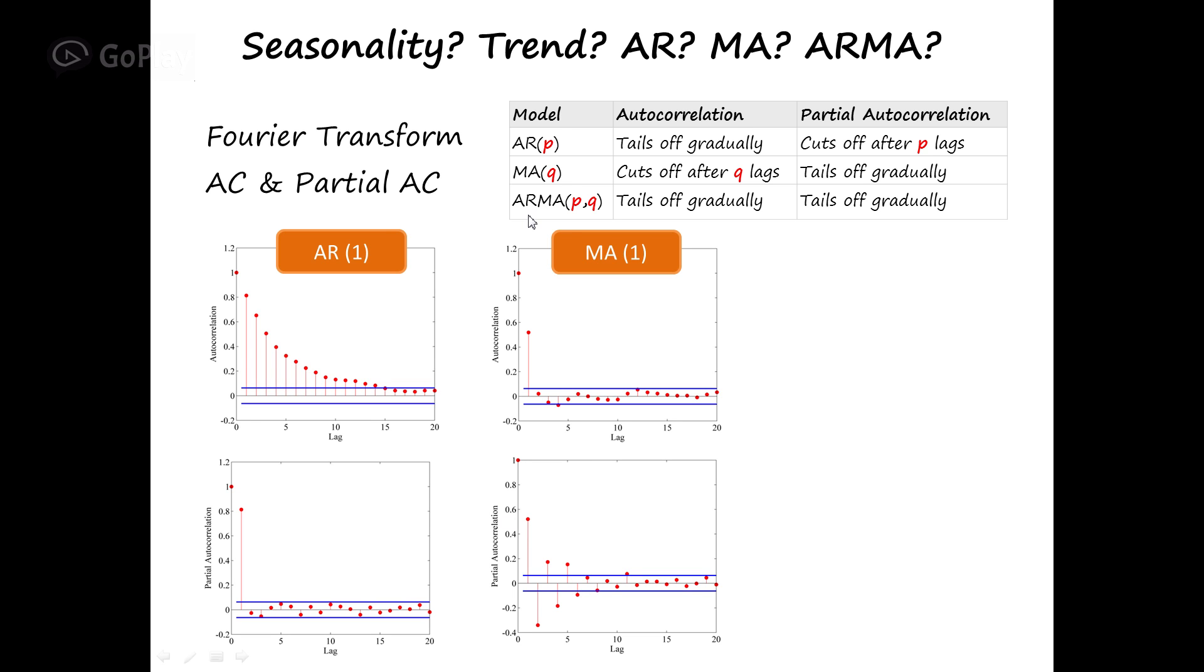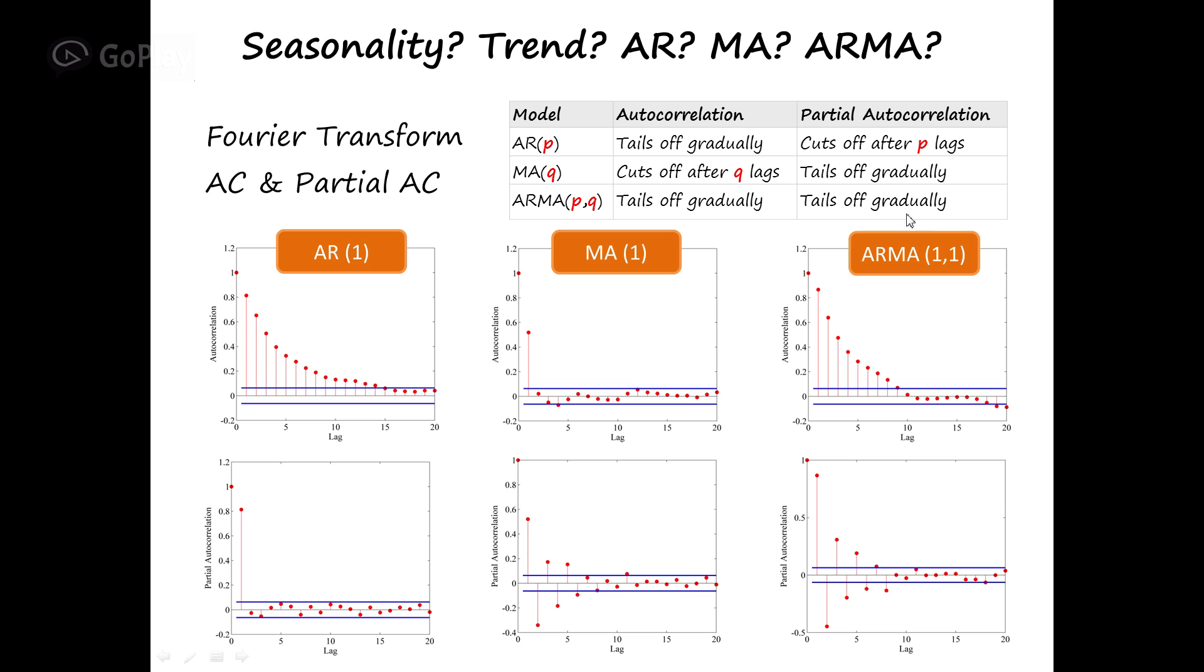And finally, if your model is ARMA, you can see autocorrelation tails off gradually and partial autocorrelation tails off gradually. Here's an example ARMA 1 and 1. Autocorrelation tails off gradually and partial autocorrelation tails off gradually. I forgot to mention that whatever is inside these two bands is not statistically significant, and we can ignore it.